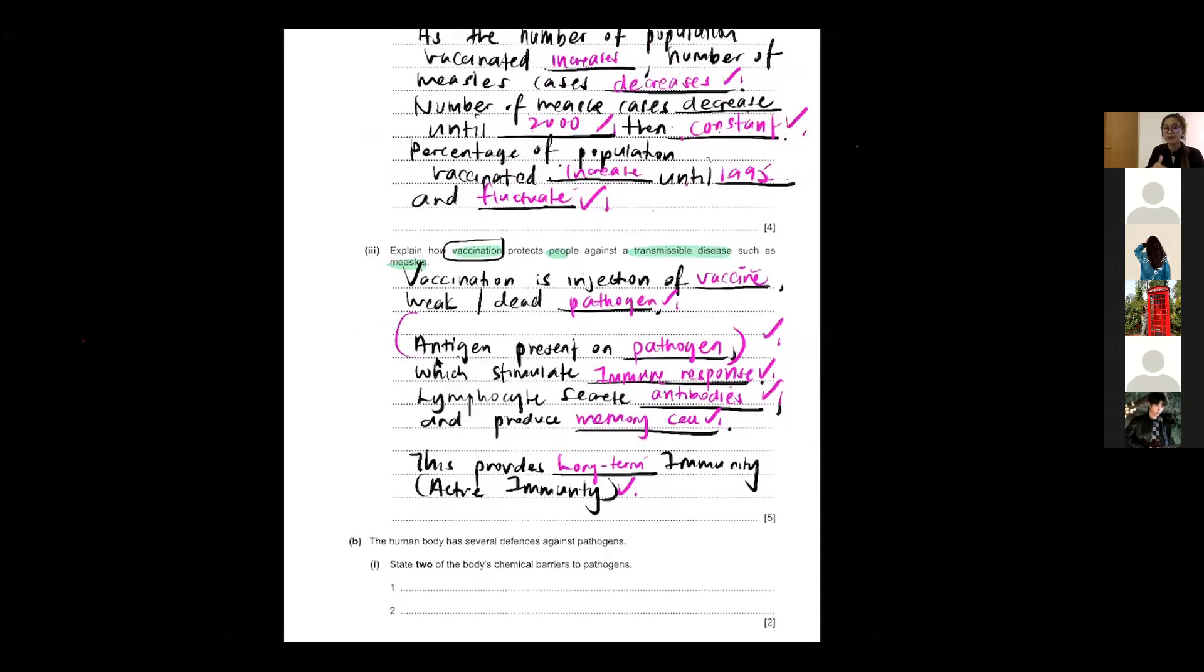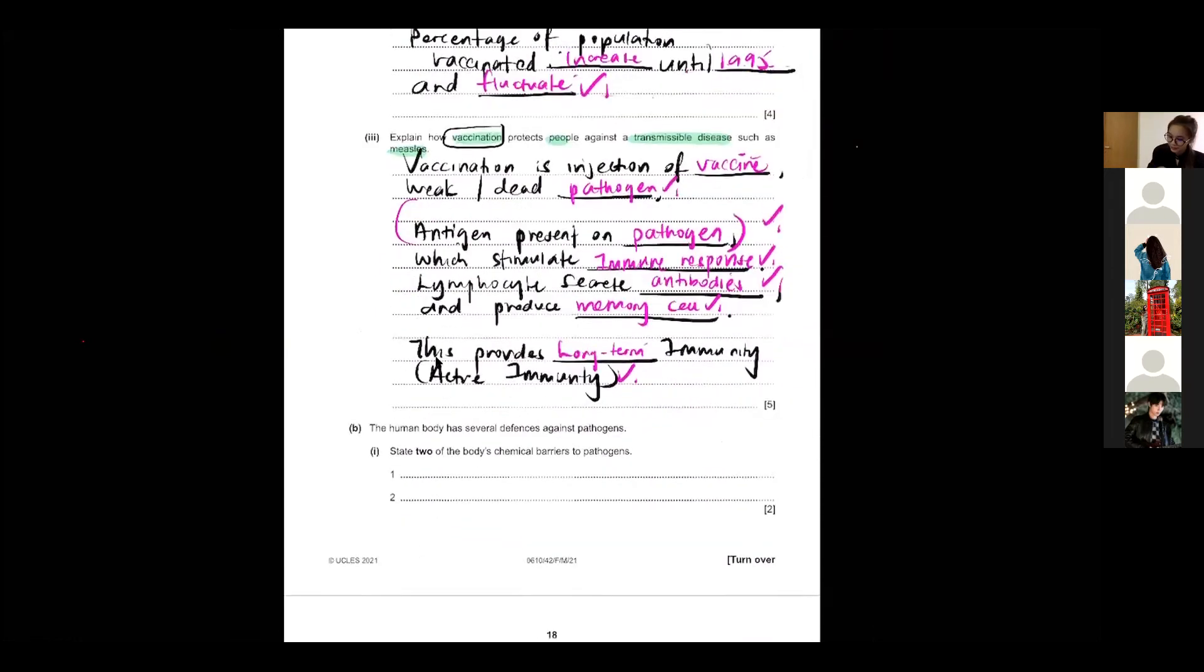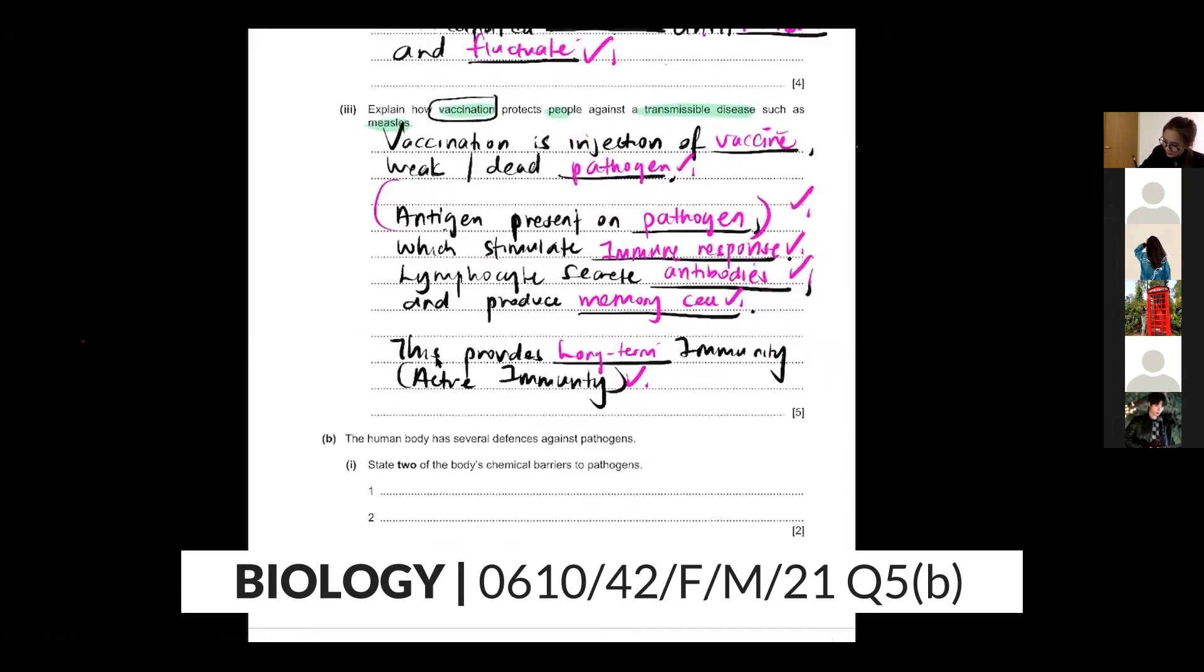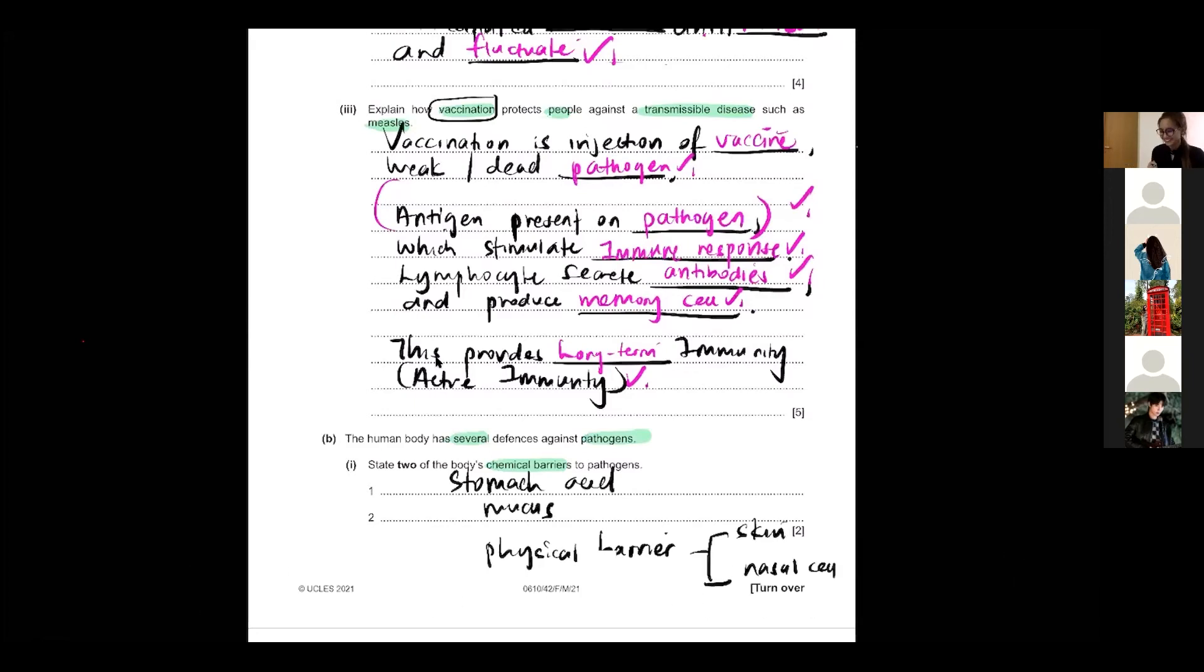Okay guys, next one. The body has several defense mechanisms. What is the chemical barrier? Stomach acid, very good, thank you people. Stomach acid, hydrochloric acid, and also your mucus. Since we talk about this, can you guys tell me what is the physical barrier? Skin, nose hair, very good. Nasal hair, very good people. If they ask you about cell, lymphocyte, phagocytes, done.